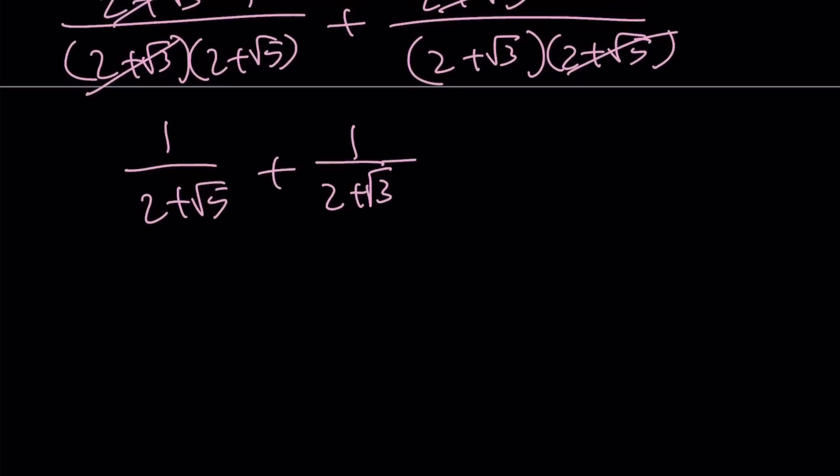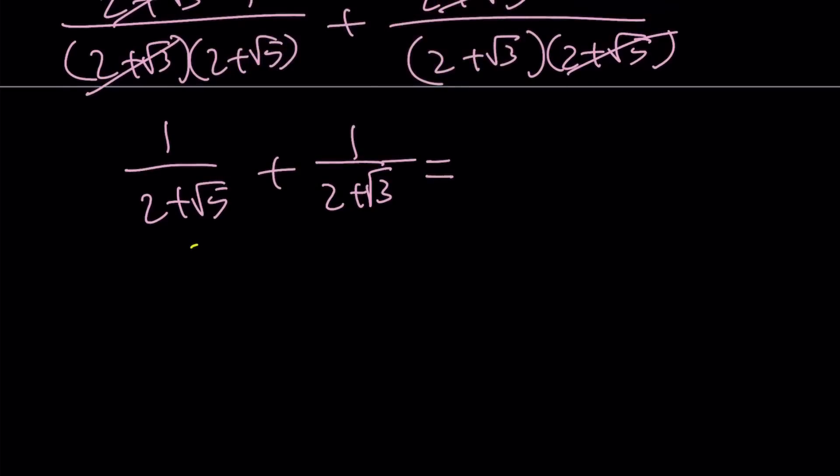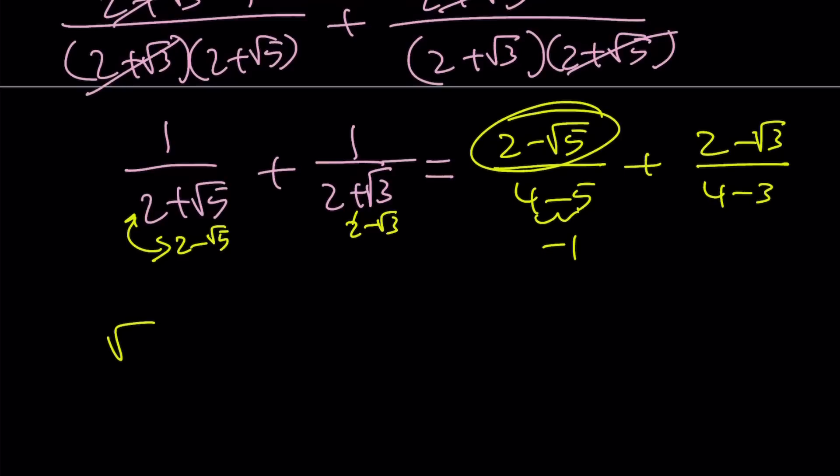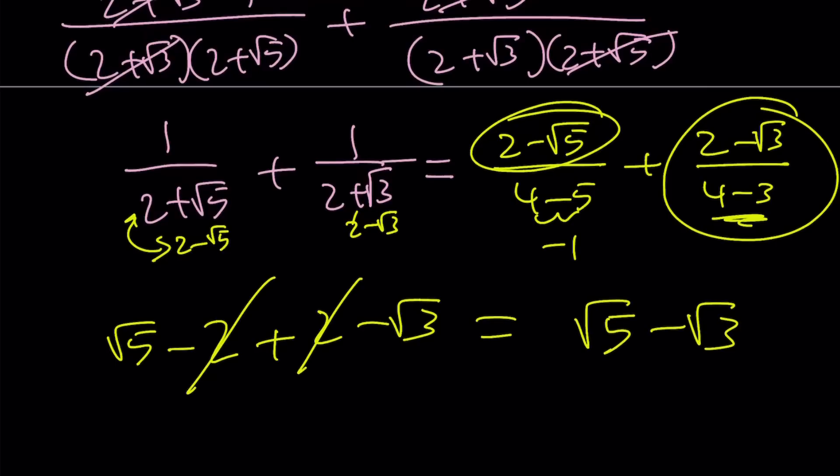This is how I kind of came up with the problem. I thought of this and then I made a common denominator and gave you the expression. Now we can multiply by conjugates. In this case, they are going to be 2 minus root 5 and 2 minus root 3. Of course, they're going to be multiplied by 1. And the bottom is going to be from the product of these two, difference of two squares, which is 4 minus 5. And this is going to be 2 minus root 3 over 4 minus 3, which is 1. So, this is a negative 1, which is going to negate this, which is root 5 minus 2. This is going to be 1, so it's just going to be 2 minus root 3. The 2s cancel out, leaving us with root 5 minus root 3 as before.